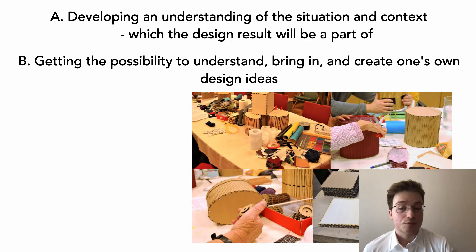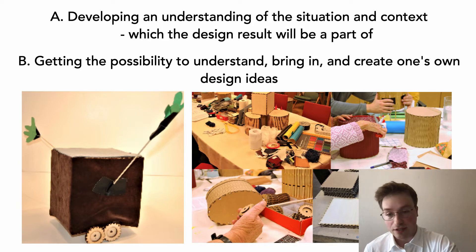The participants prototyped robots while discussing the prototype's role and use with researchers and each other. One of the participants came up with the idea to have an arm on a robot so that it could pick up things from the floor and also reach the upper shelves in the kitchen. Moreover, this robot could wash her back in the shower and stir sauce. One of the others around the table picked up on the idea and suggested to have two arms so that the robot could become a dancing partner. You can see this robot in the image on the left here.